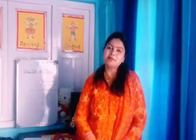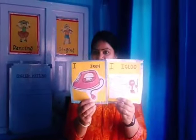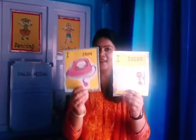Now let me show you the pictures of some objects whose names start with alphabet I. The first object is igloo — I for igloo. The second object is iron — I for iron.